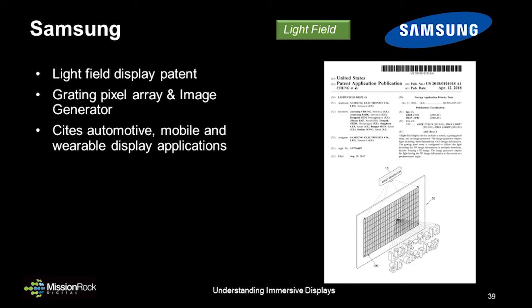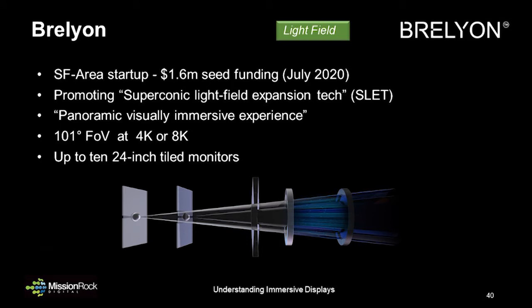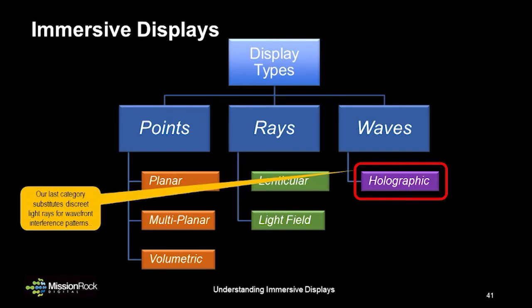Many other companies are researching and developing light field displays, such as this Samsung patent for a graded pixel array and image generator. Braylon, based in the San Francisco Bay Area, has announced development of a desktop light field display they characterize as a panoramic, visually immersive experience with a horizontal field of view of over 100 degrees. Which brings us to our last category: holographic displays, which generate images through the interference pattern between wavefronts. This is where distinctions get a bit fuzzy, because as you increase the ray density in a light field display, the result starts to behave more like a traditional interference hologram pattern. Typical use of diffractive optics in a holographic display will have limitations in creating objects whose appearance shifts at different viewing angles.